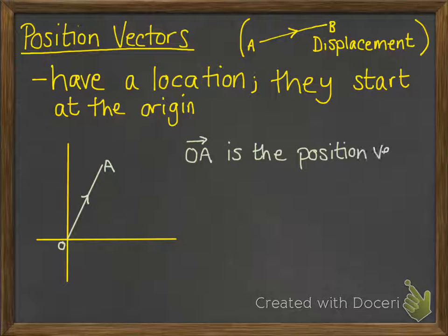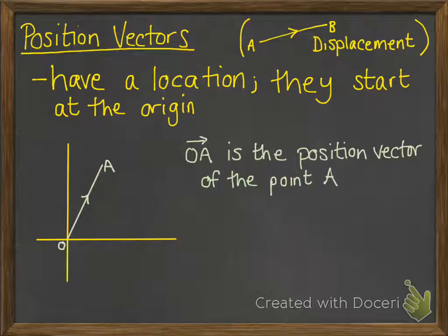So this particular vector OA is the position vector of the point A. It's telling us where it is in relation to the origin.